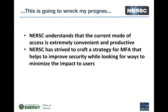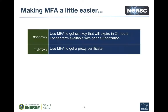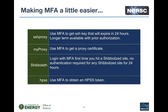An obvious concern is: this is gonna wreck my science, this is gonna slow me down. We know that the current model we've had in place is very lightweight. When we crafted the strategy, we really looked for things that would be as low in impact as possible. We've tried to implement solutions and workarounds so that people's workflows and processes are still pretty productive and efficient. So what are some of the things we're doing to make MFA a little easier?